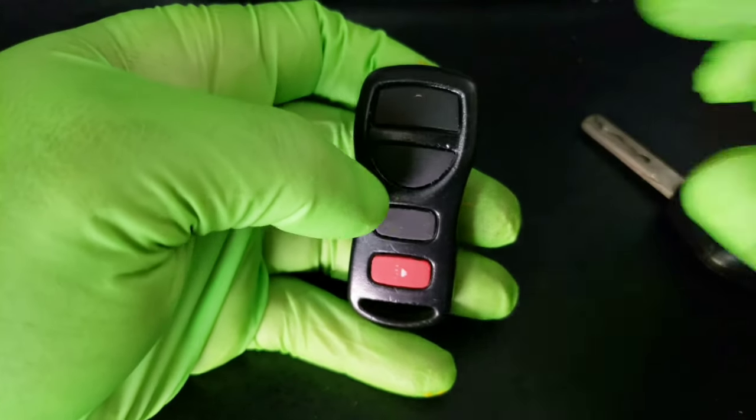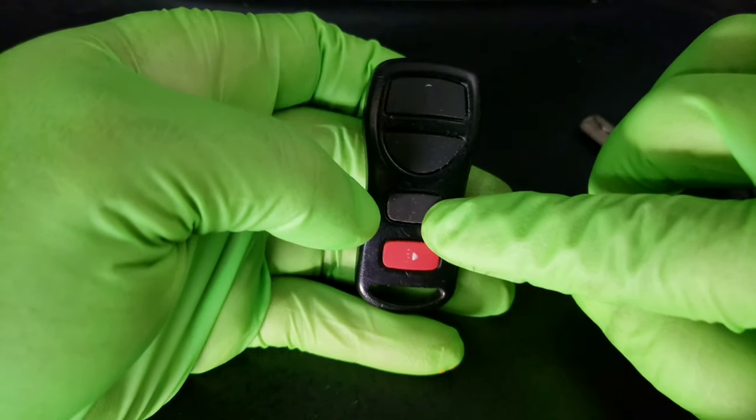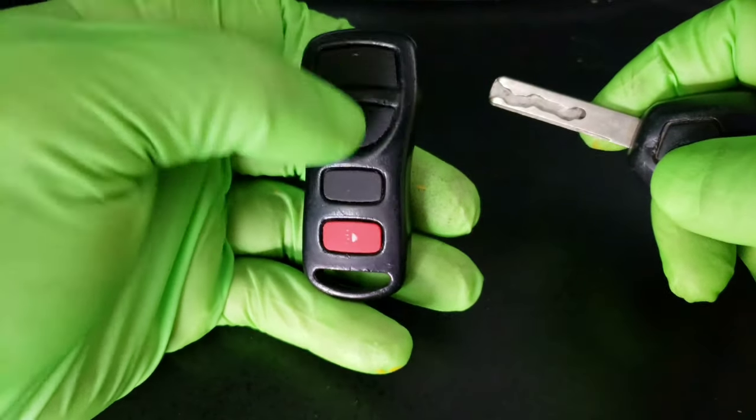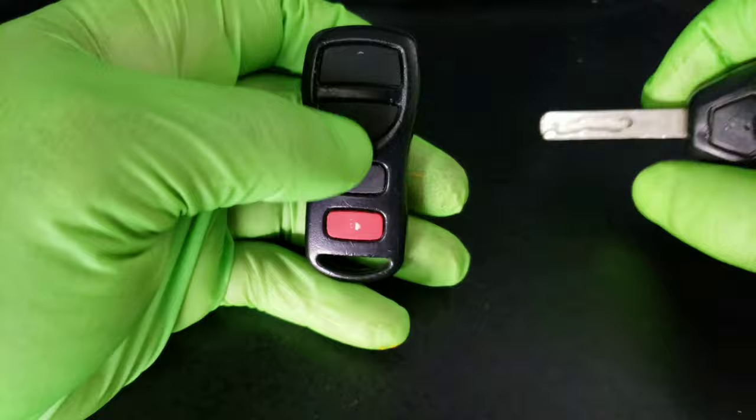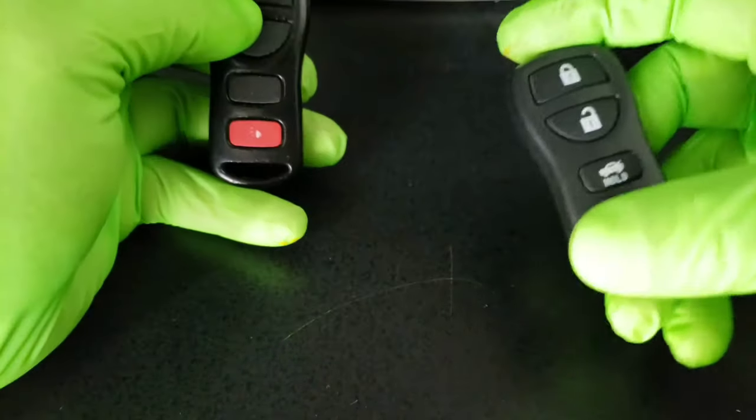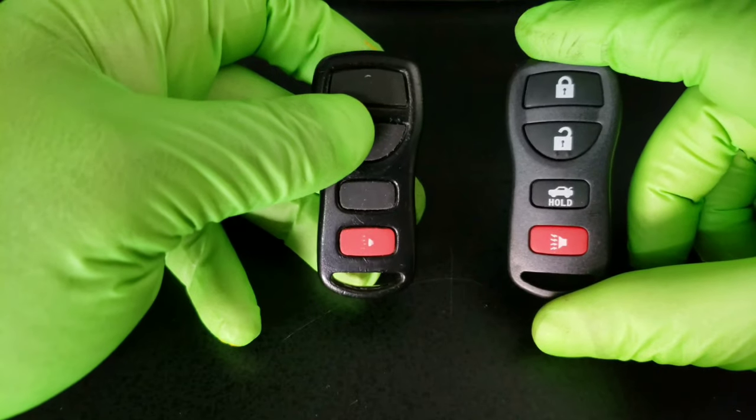Well, this one has the opposite. It has lock on top, unlock, and trunk. Now, switching between these two, you kind of get confused which one does which, and though it's very minor, it's still an inconvenience when something like this off of eBay only costs $1.